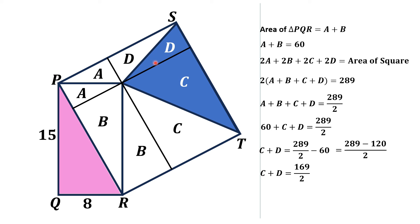If we look at the figure, C plus D is actually the blue shaded area which we have to find. Thus, the blue shaded area equals 84.5 square units. That is the answer.